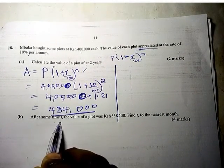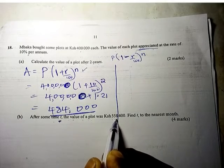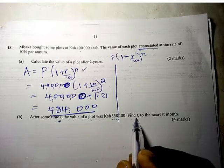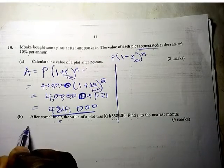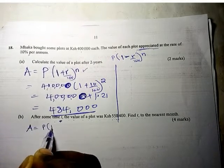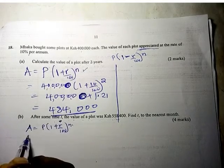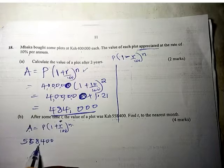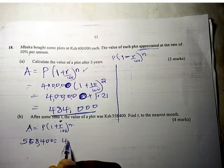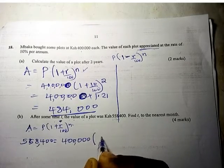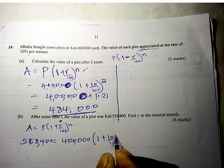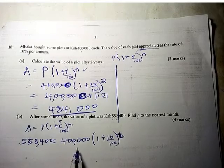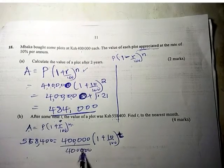After some time t, the value of the plot was 558,400. Find t to the nearest month. We have been given the amount equals principal into 1 plus the rate of 10 over 100 raised to power t. We are looking for the time t. To get that, we divide by 400,000 on both sides.